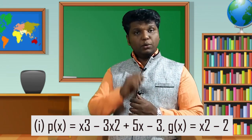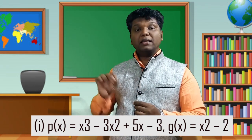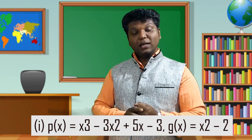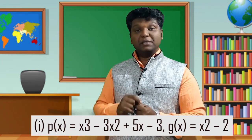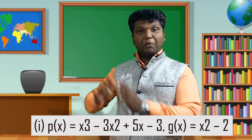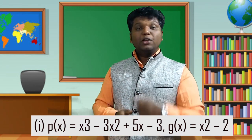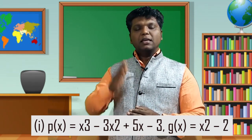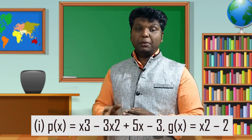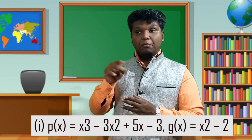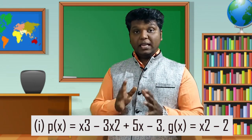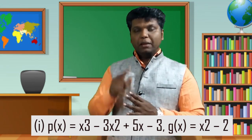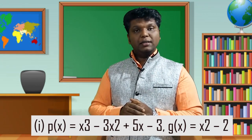Now check g(x) = x² − 2. Something is missing — the x term is absent. After x² there should be an x term. So bring it to standard form by introducing 0x: write it as x² + 0x − 2. If any term is missing in between, fill it with a coefficient of 0.